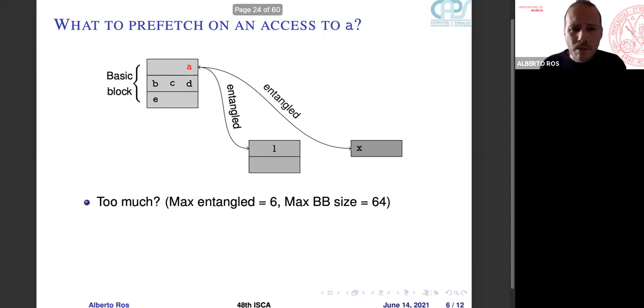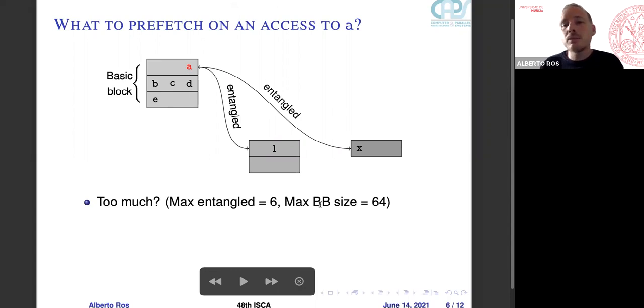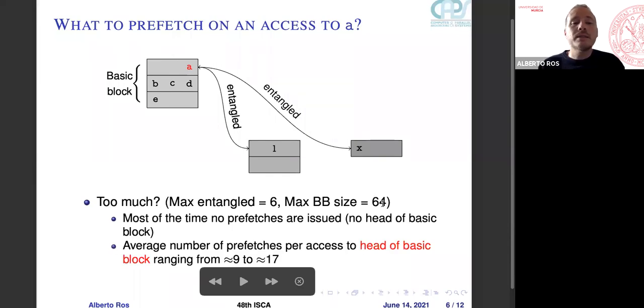Looks like too much prefetching? Not actually. So we have maximum destinations per source of 6, and the maximum basic block size is 64. Many times we access cache lines that are not heads of basic blocks, so we entail 0 prefetches. And sometimes we access the head of the basic block, and we issue a number of prefetches ranging from 9 for several applications to 17.